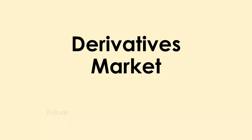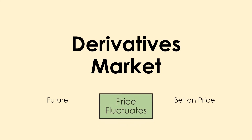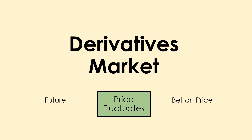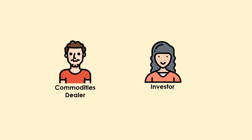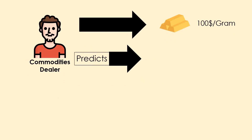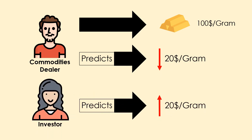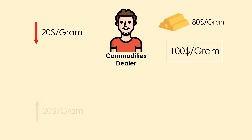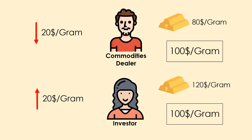The derivatives market is quite interesting. To understand it, let's consider the term 'futures' — basically a bet on a certain price. In the commodities market, prices fluctuate. Let's bring in Mashat, an investor, and Ishmael, a gold dealer. Ishmael sells gold at 100 dollars per gram but predicts the price may drop by 20 dollars. Mashat thinks the price will go up by 20 dollars. They bet against each other and set a future date to trade the gold. If the price drops, Ishmael profits — the market price is 80 dollars but he sells at 100. If the price rises, Mashat wins — she buys gold for 20 dollars less than the market price. The contract is derived based on the present market price, hence the name derivatives market.